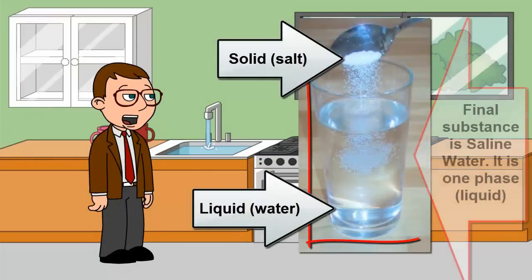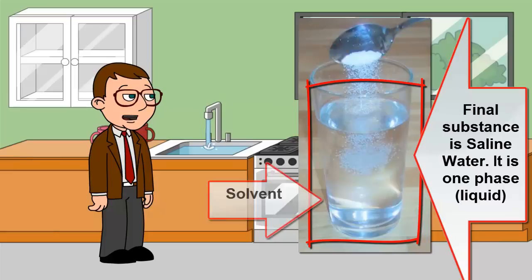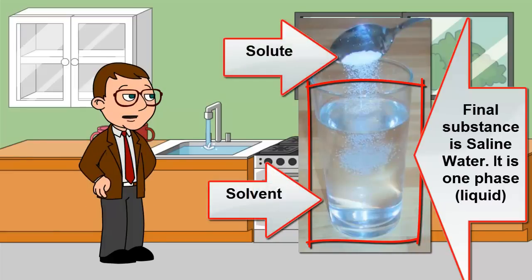A solution is like a mixture, but only composed of one phase. A solvent is the substance that does the dissolving, and the solute is what gets dissolved.